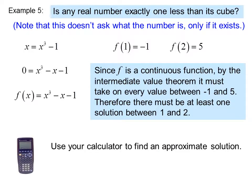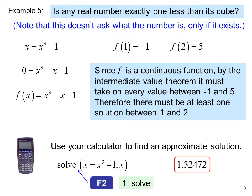You can use your calculator to find an approximate solution. Use the solve command, solve x equal x cubed minus 1, x. And we get 1.32472 as an approximate solution.